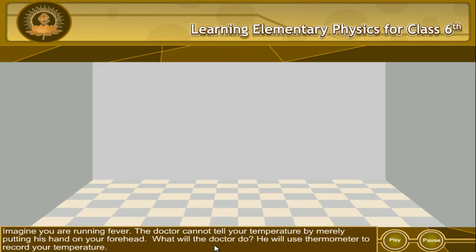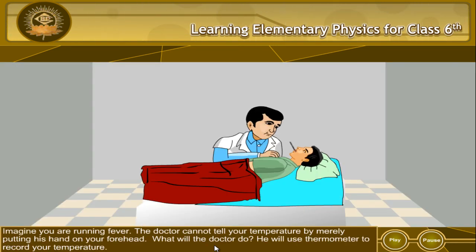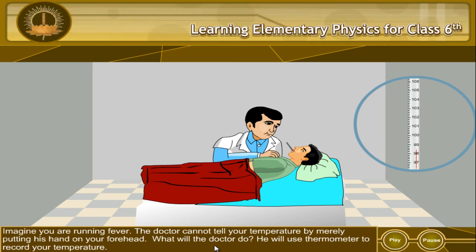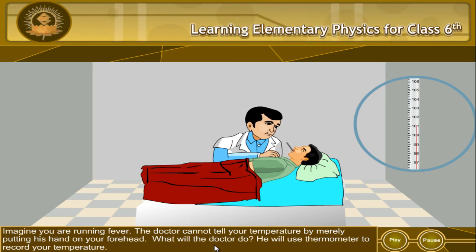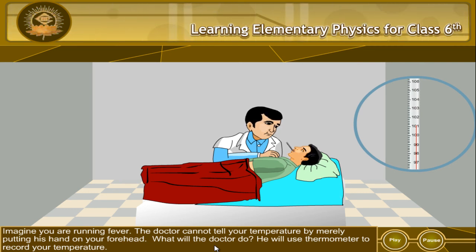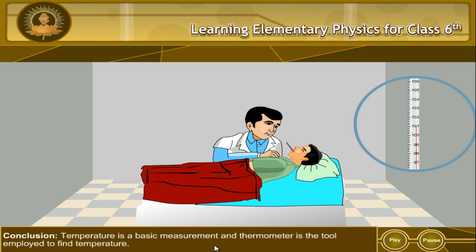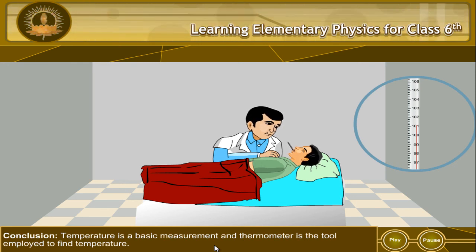Example 4. Imagine you are running a fever. The doctor cannot tell your temperature by merely putting his hand on your forehead. What will the doctor do? He will use a thermometer to record your temperature. Conclusion: Temperature is a basic measurement and thermometer is the tool employed to find temperature.